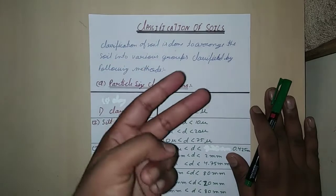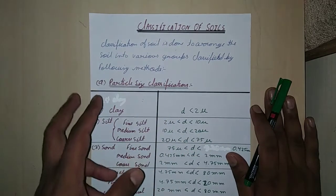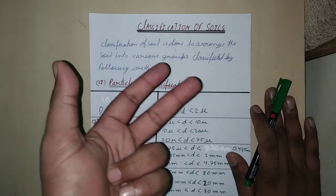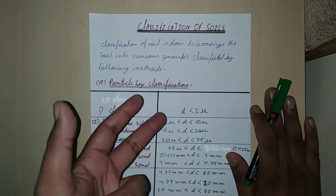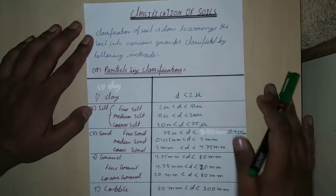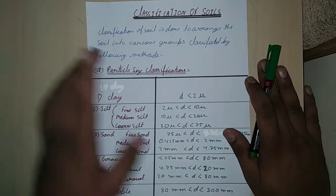There are two types of classification. One is particle size classification and the other is Indian soil classification.